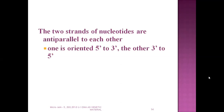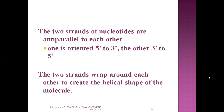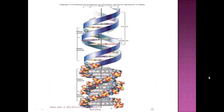Parallel lines do not cross each other. One strand is oriented 5' to 3' and the other is oriented 3' to 5'. The two strands wrap around each other — like wrapping a ribbon — to create a helical structure. In the diagram you can see a major groove and minor groove, with 3.4 nanometers per full turn and 0.34 nanometers per base pair step.